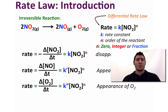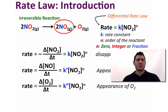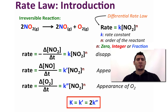Since for every two nitrogen dioxide molecules consumed we generate one oxygen molecule and two nitrogen monoxide molecules, the rate constant K is equal to the rate constant K′, which is equal to twice the rate constant K″.